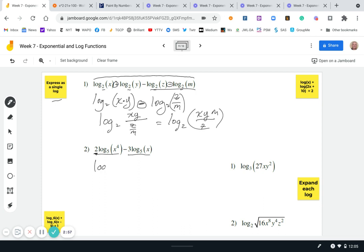So we're going to say log base five, and we're going to bring that two up here and raise it to that. So when we exponentiate an exponent, we multiply. So four times two is eight. So this is going to be log base five of x to the eighth minus three log five x.